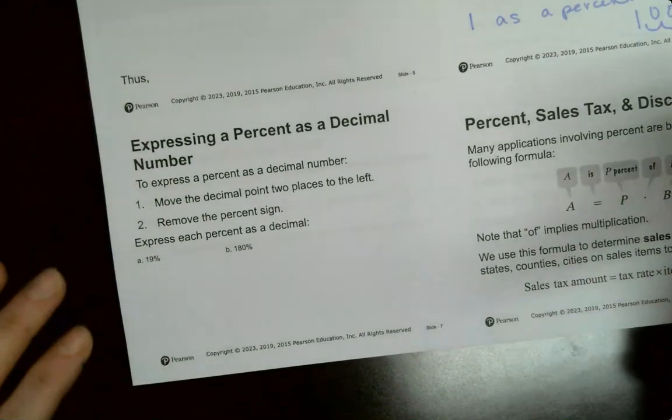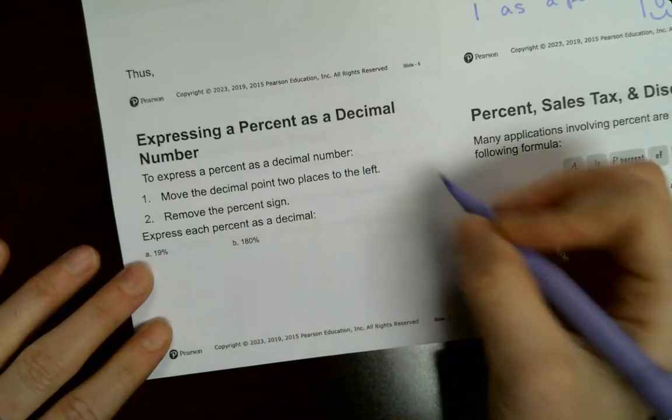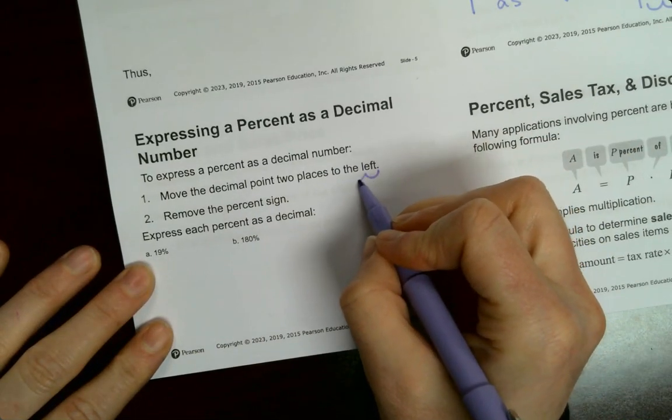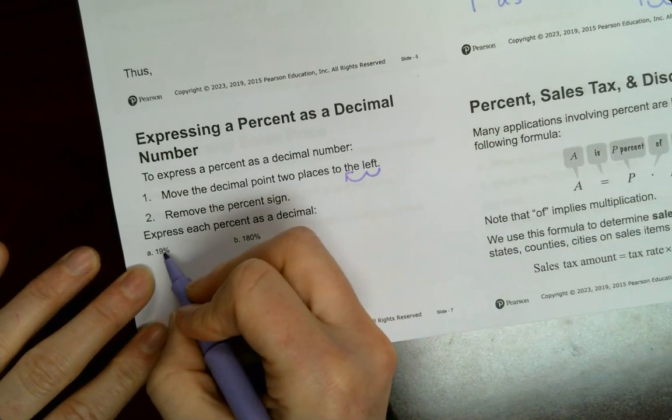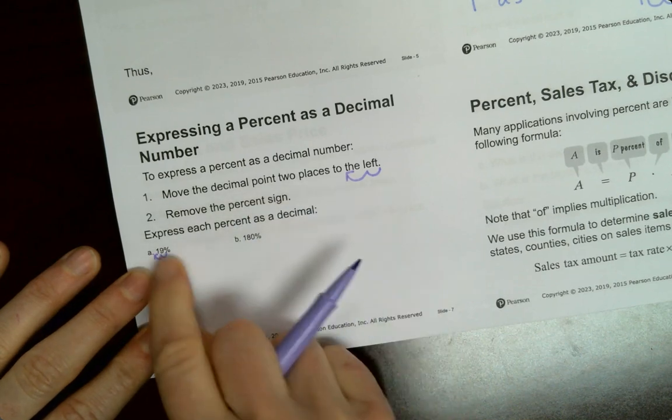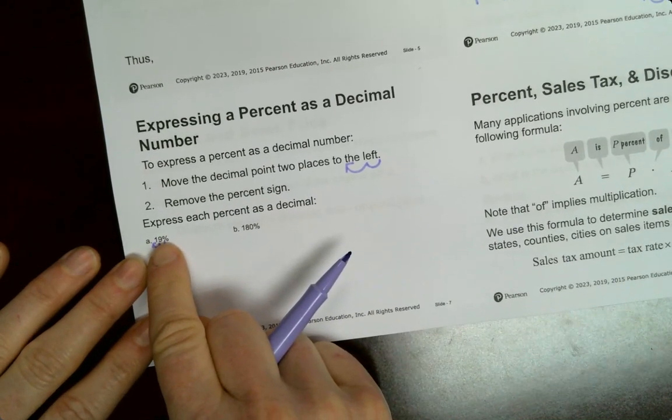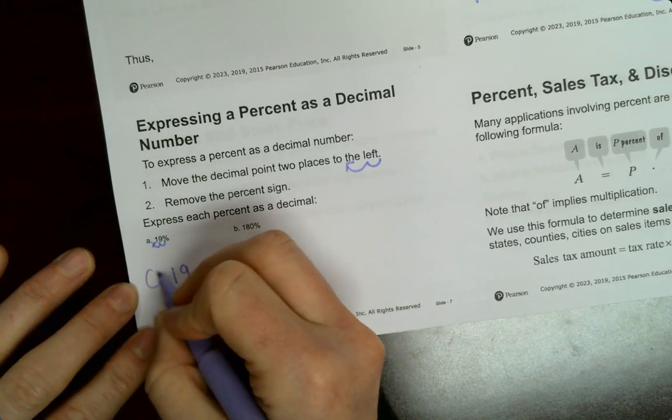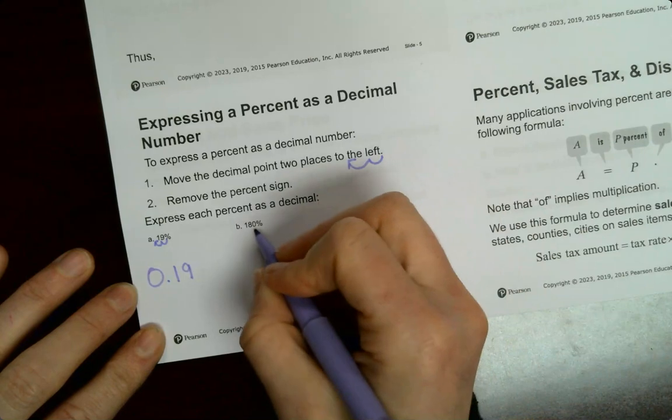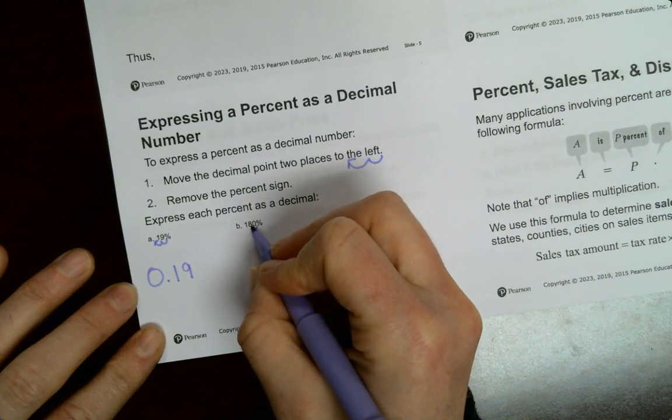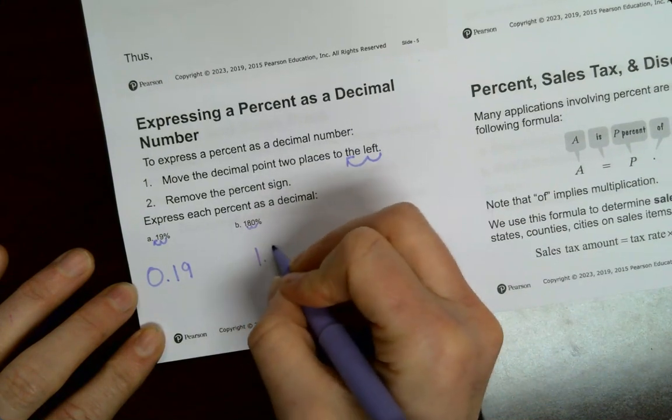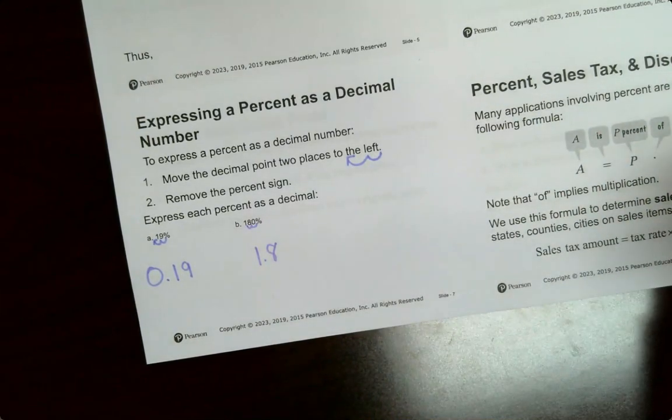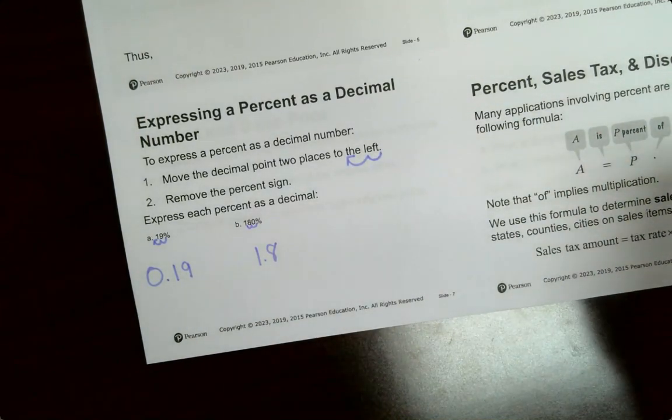This says to express the percent as a decimal. So we're going to go the opposite way. We're going to go left. One, two places to the left. So one, two. The decimal starts at the end. If there's not one, it starts from the far right, right before the percent sign. It's going to be 0.19. 180% move over two places. That would be 1.8. Percent is gone. Once you move your decimal, percent goes away.